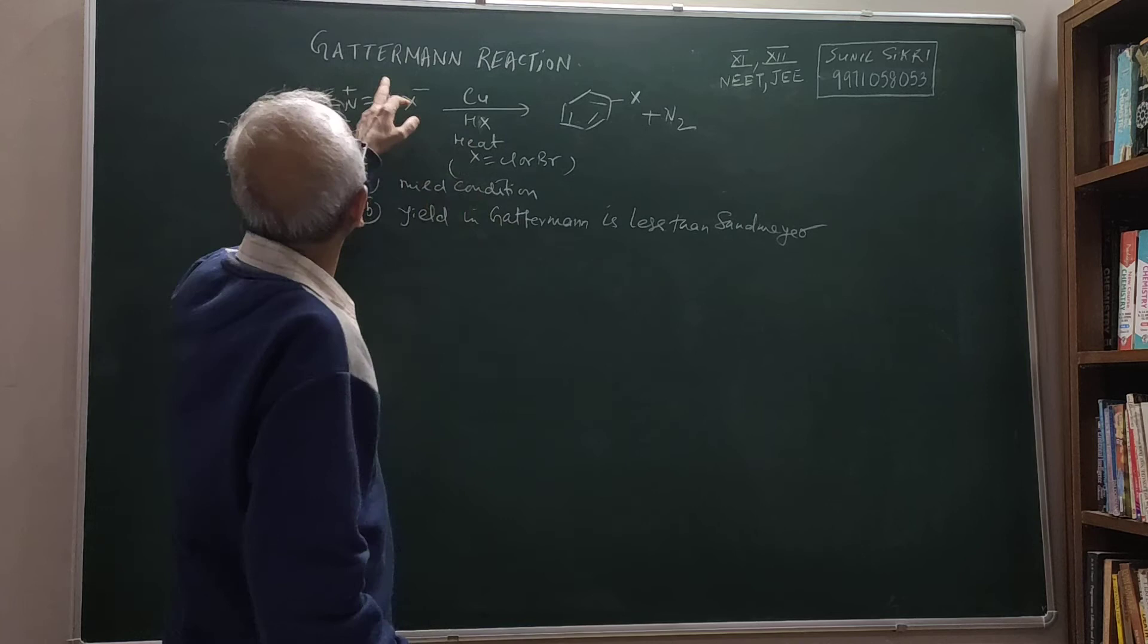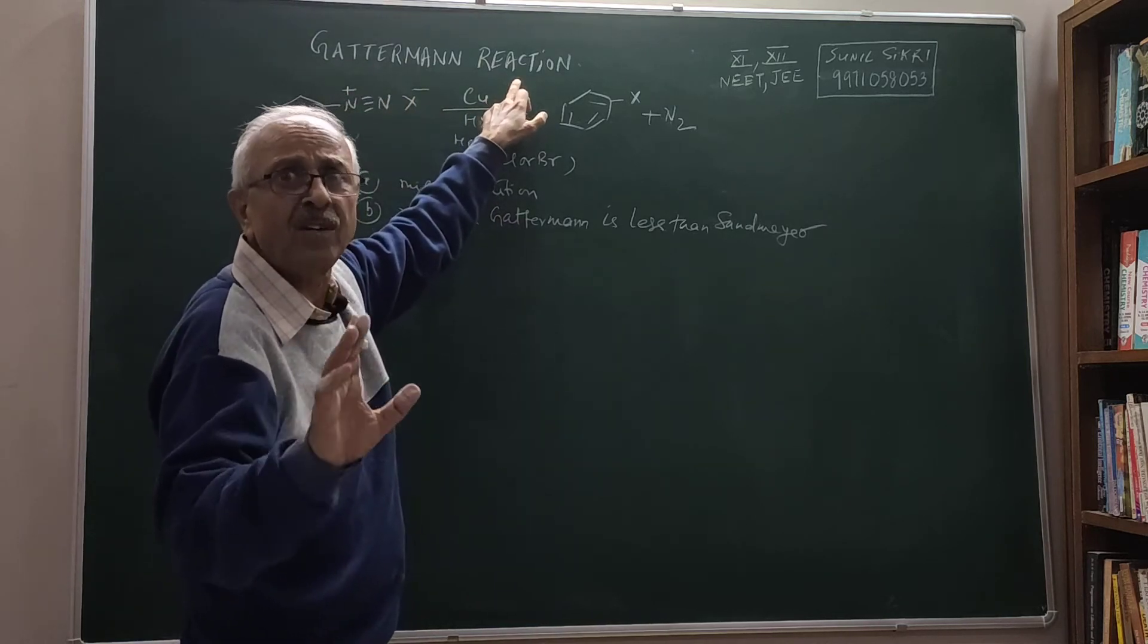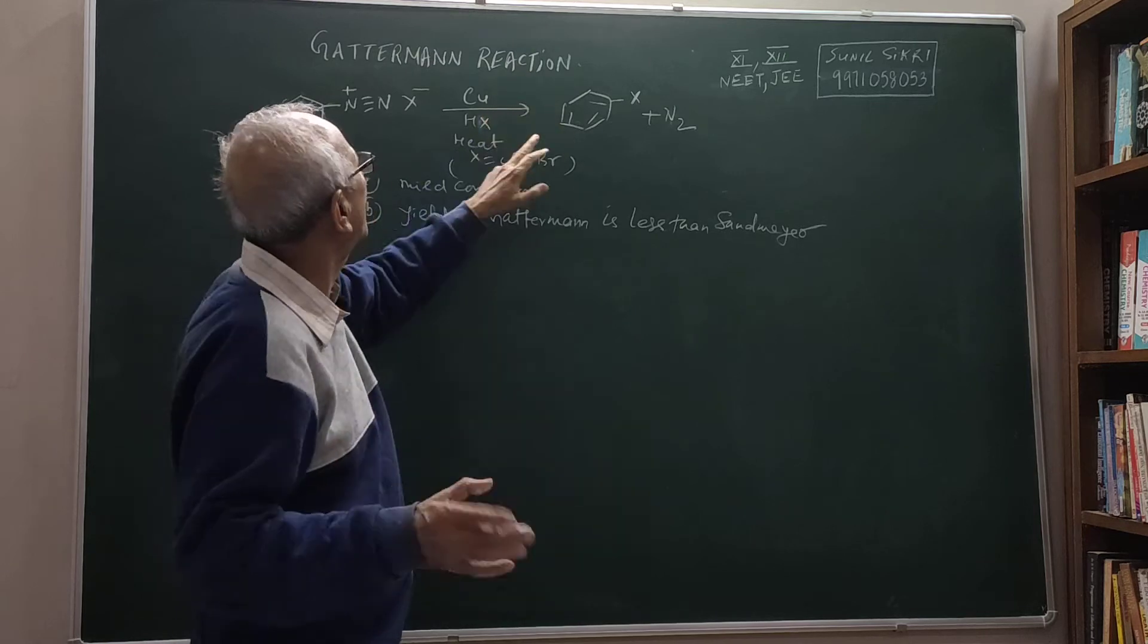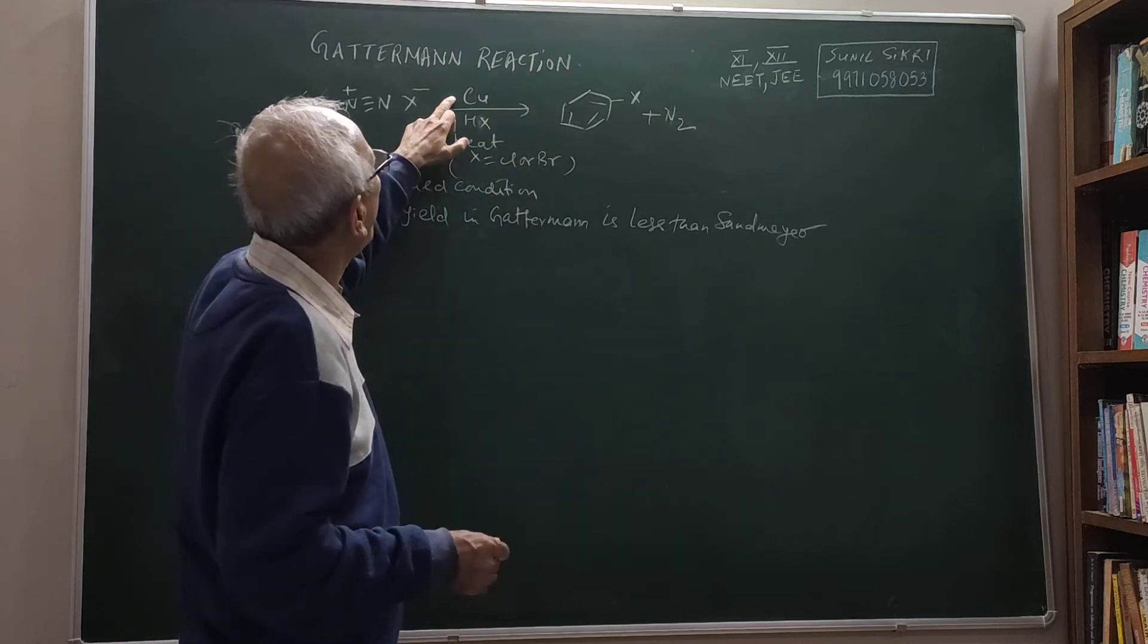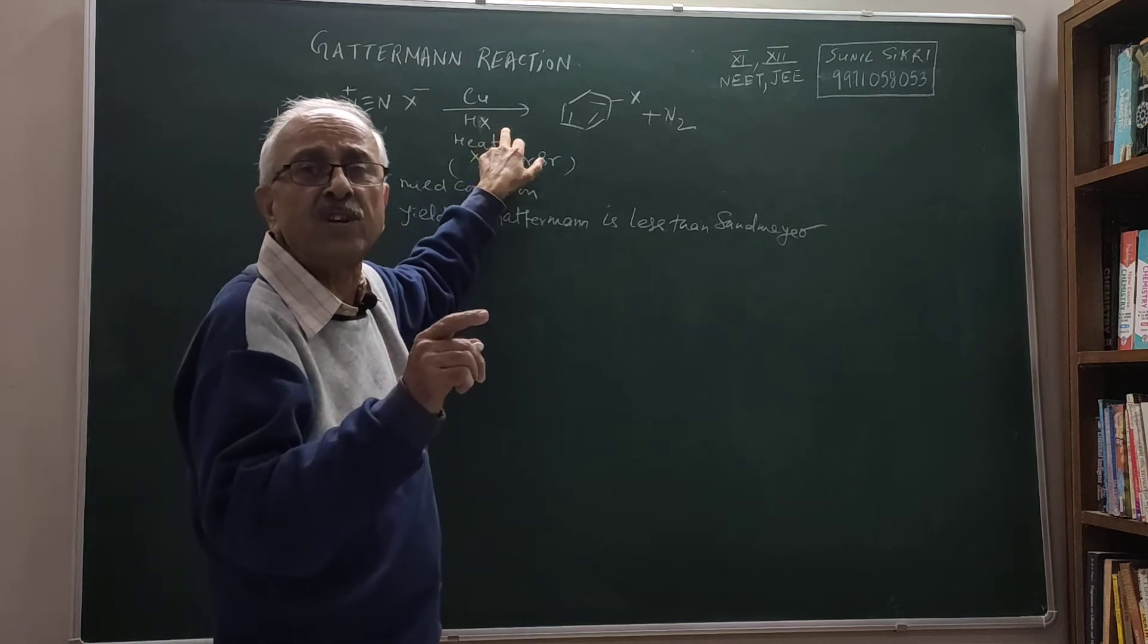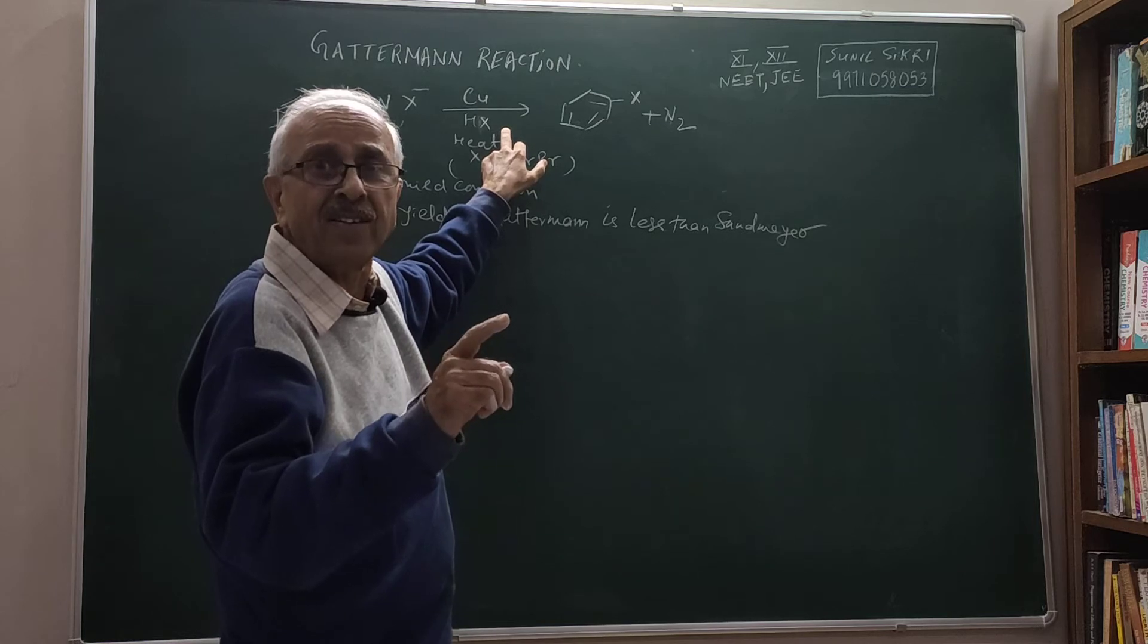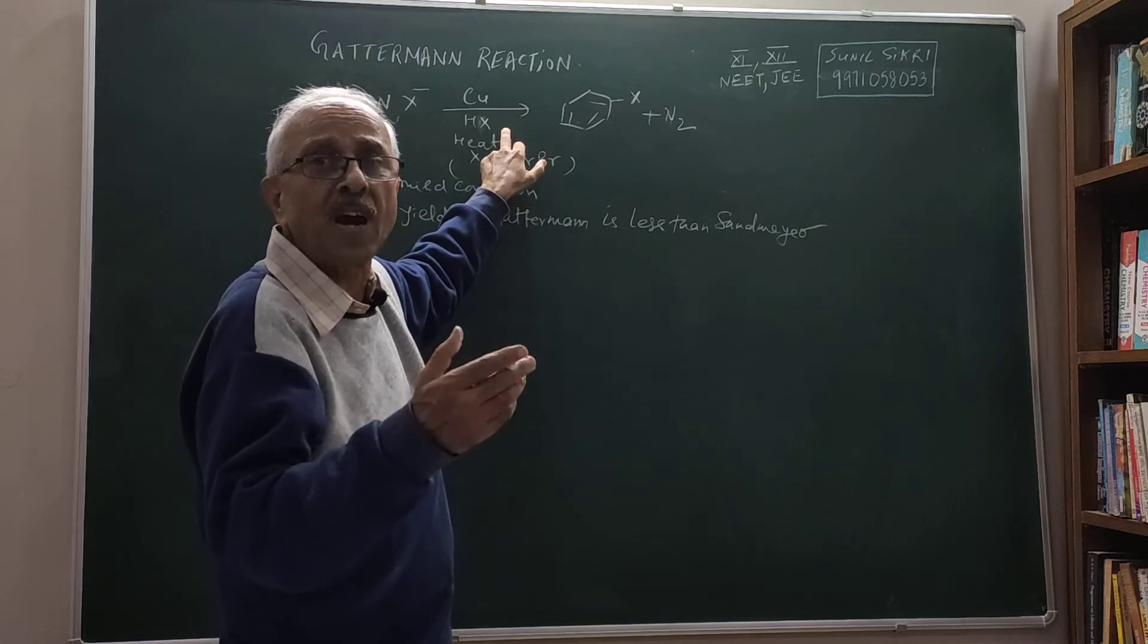Now I have another reaction which is called Gatterman reaction. It is a similar type of reaction to Sandmeyer reaction, but in this case the only difference is I am using copper powder and hydrogen halide acid. In that case I was using CuCl, copper(I) chloride or copper(I) bromide as a catalyst in the presence of HCl or HBr.